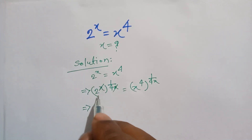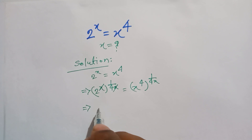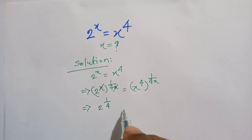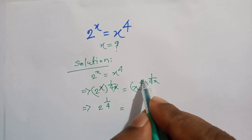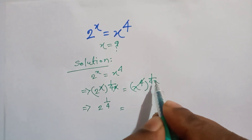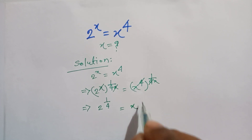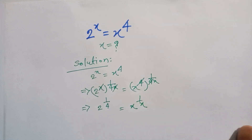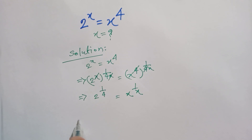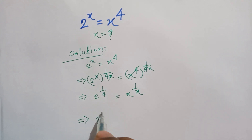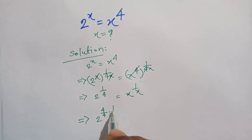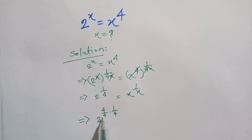On the left side, this x and that x cancel out, so it can be written as 2 to the power 1 over 4. On the right side, this 4 and that 4 cancel out, so it can be written as x to the power 1 over x. Or we can write: 2 to the power 4, divided by 4, times 1 over 4.